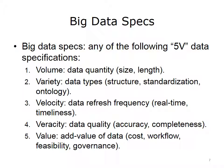Big data is often defined as having at least one of the following specifications: a higher-than-usual volume of data, also referred to as the data quantity, size, or length; a large variety of data types or data sources that bring along new data structures, standardizations, or vocabularies that are uncommon to population health; a high velocity of data with high frequency of refreshes, such as real-time data feeds; a complex veracity of data sources with varying accuracy or completeness for population health analytics; and an ambiguous value of new data sources in terms of cost, workflow, complexity, feasibility, and governance. Note that these specifications should be treated relative to the common practice in a given field.